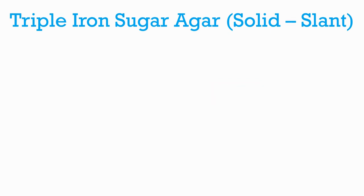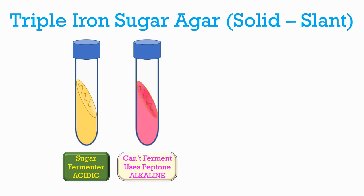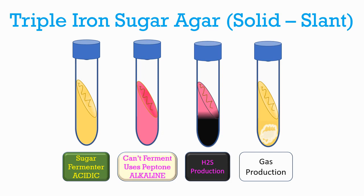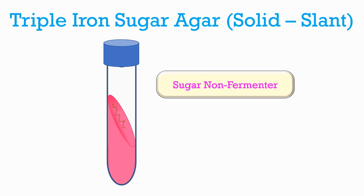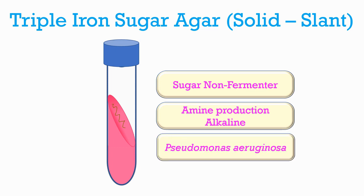There are four types of visible reactions in TSI agar: yellow color production by sugar-fermenting bacteria, pink color by non-fermenting bacteria, black discoloration mainly in the butt by H₂S-producing bacteria, and disruption of the medium in the butt region by gas-producing bacteria. Various combinations of these four reactions can be seen. Non-carbohydrate fermenters utilize peptone in the medium, producing amines that make the medium alkaline, indicated by pink color throughout. An example is Pseudomonas aeruginosa.